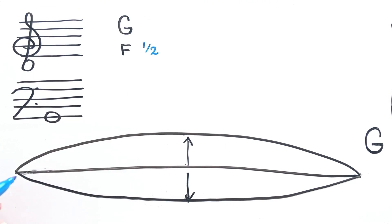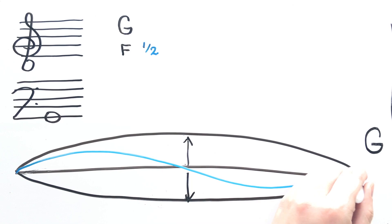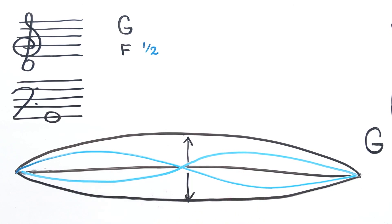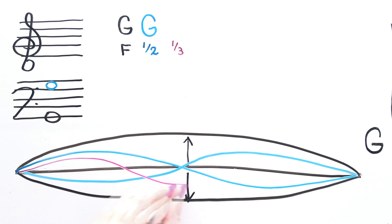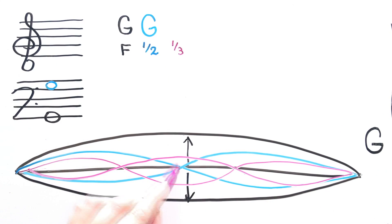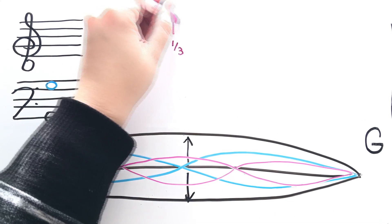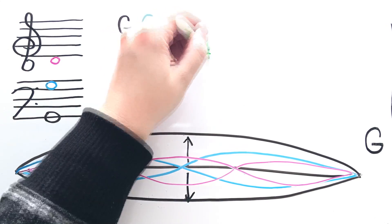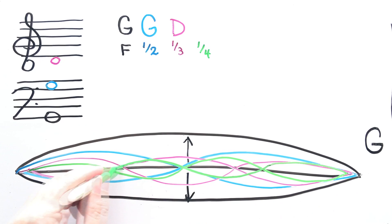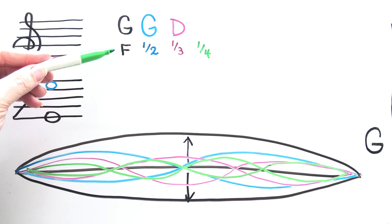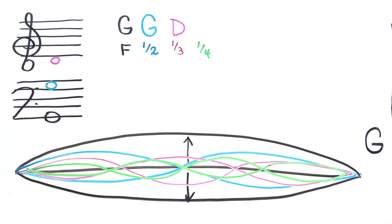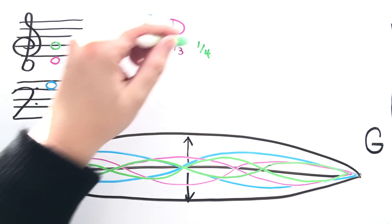The first overtone above G will split that string in half and it will double the frequency, so each of these are producing a frequency that is double that of the fundamental. That note will be one octave higher — another G. The next overtone in the series is going to split that string length into three, so this takes that fundamental frequency and multiplies it by three. That gives you a fifth, which is a D. The next overtone is going to split that vibrating string into four sections, so that original fundamental frequency is multiplied by four, and that gives us another octave which is a G.